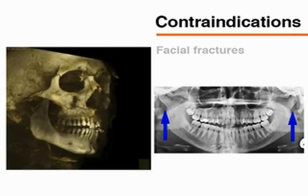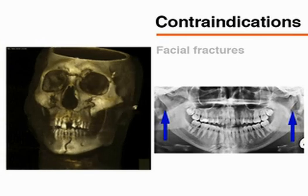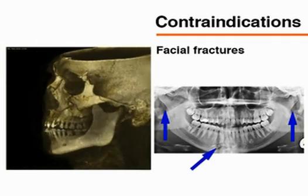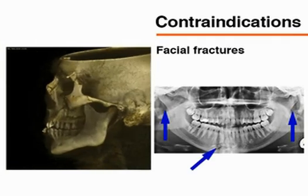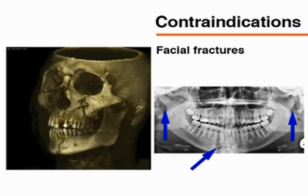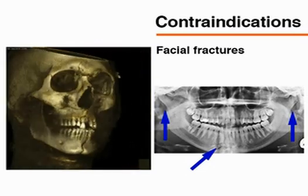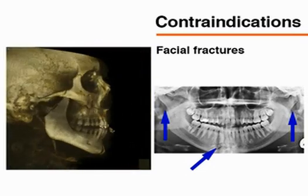The primary contraindication to the correction of TMJ dislocation is the presence of facial fractures. If you suspect that a patient has facial fractures, obtain radiographic images of the affected area and do not attempt to reposition the mandible.